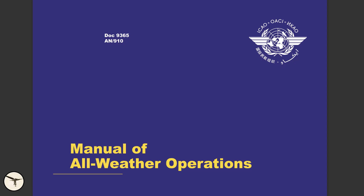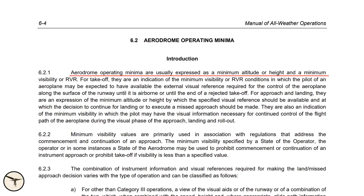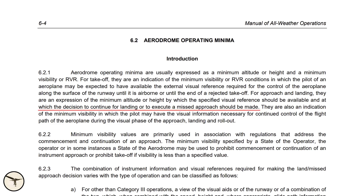Here is an extract from my ops manual for all weather operations. Aerodrome operating minima are usually expressed as a minimum altitude or height, and a minimum visibility or RVR, which means runway visual range. For approach and landing, they are an expression of the minimum altitude or height by which the specified visual reference should be available, and at which the decision to continue for landing or to execute a missed approach should be made. Note the wording: continue for landing.